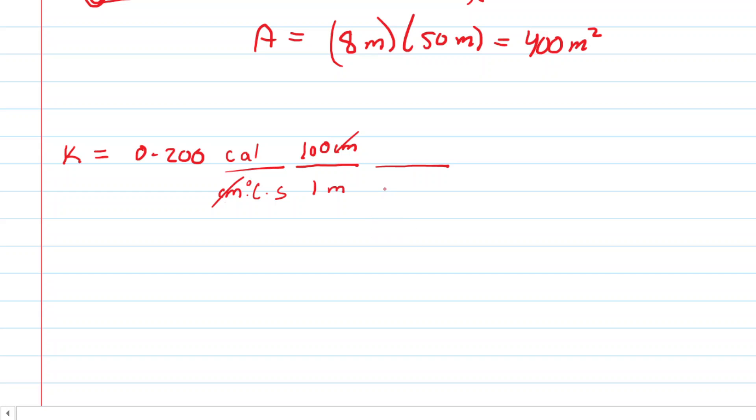We also know that one calorie is equivalent to 4.186 joules, and if we multiply by that conversion factor, the calories will cancel out. We'll punch this into our calculator and get 83.72. And dimensionally, we now have joules per meter seconds degrees Celsius. So we can write that out.